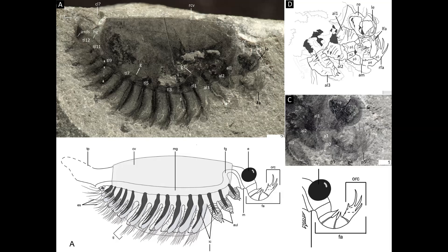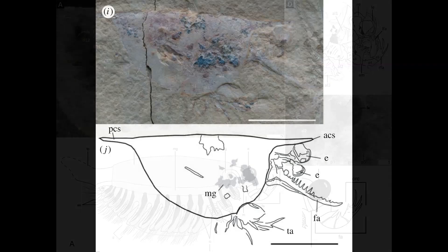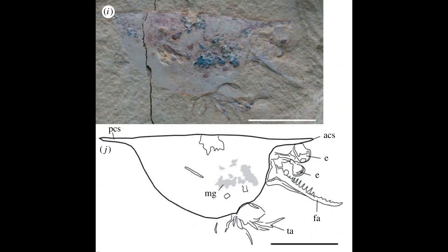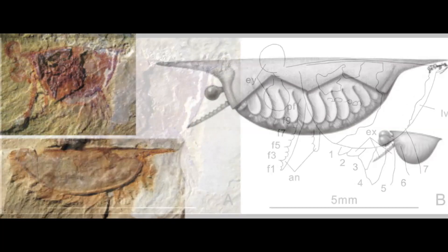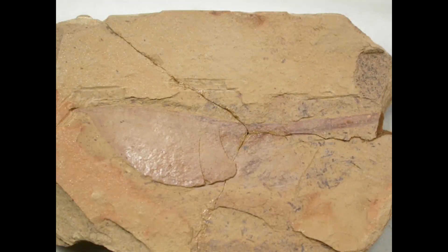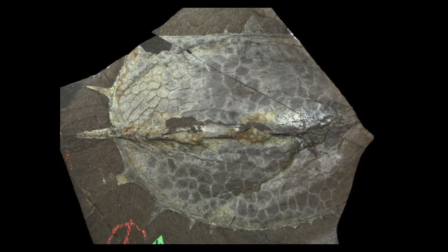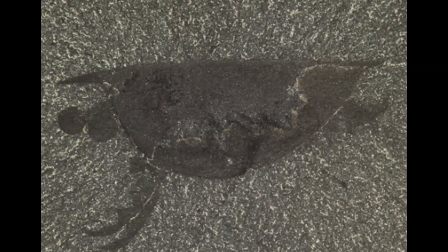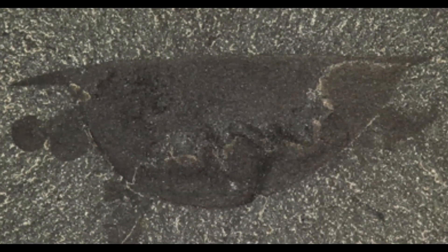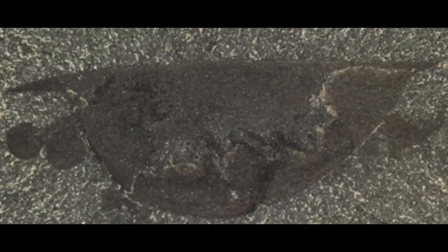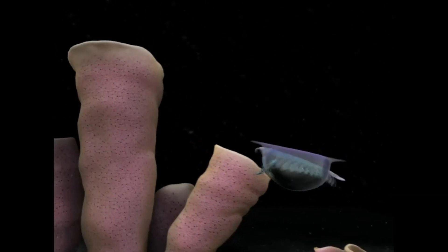Depending on the type of Isoxys, the first appendage is still looking like the radiodontan appendage. In some others, the antennule is already formed. From the Isoxys that have the antennule, mandibulates evolved. But Isoxys kept evolving on their own, creating alternative branches and specifically evolving their carapaces. Without doubt, the carapace was a fundamental part of the Isoxys life cycle — it not only served as protection against predators, but also served as an isolated chamber for their eggs.